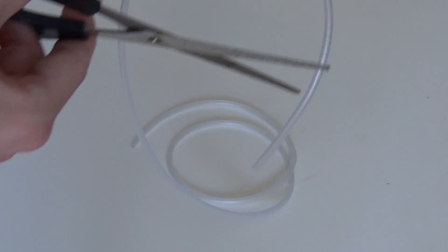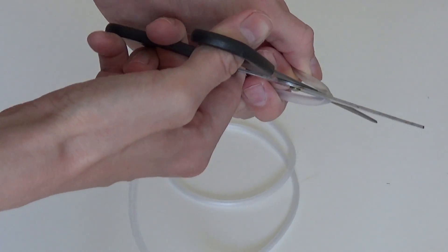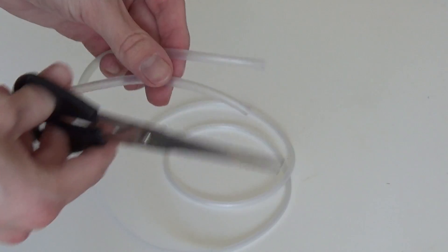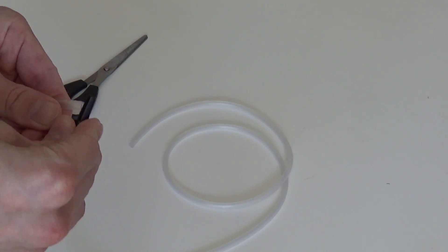First you measure out how long the tube needs to be to reach. Then you cut off a piece of tube. You will need this piece to attach to the valve later. Attach both pieces to the valve like so.